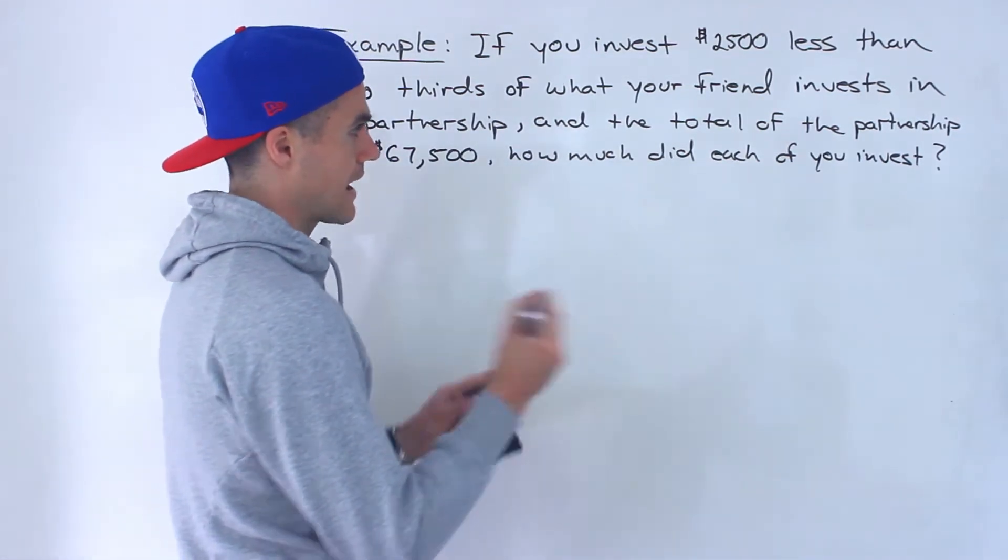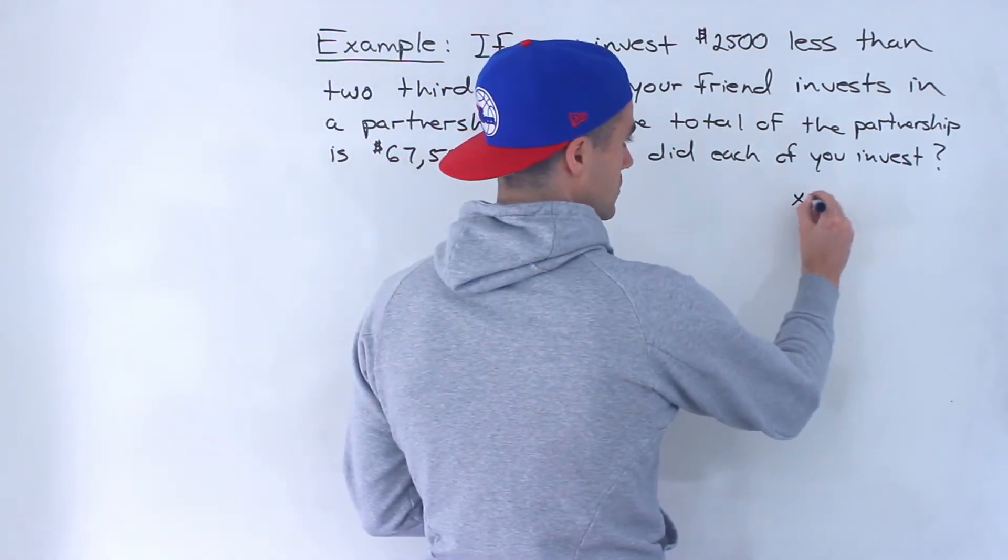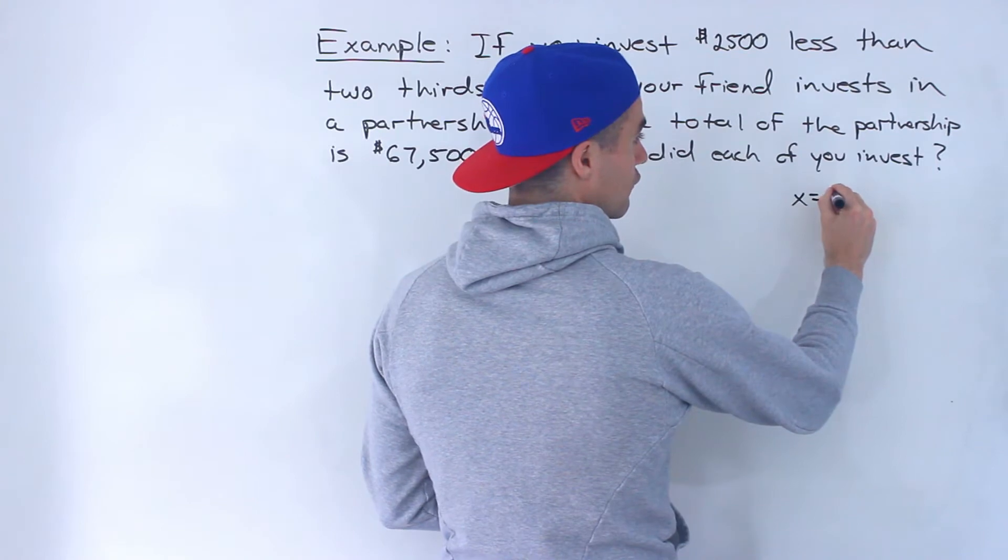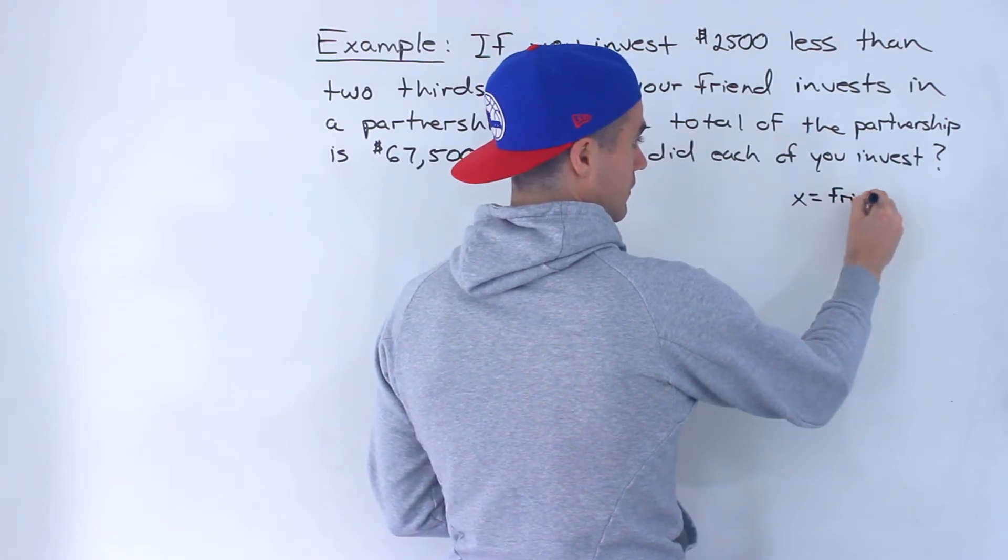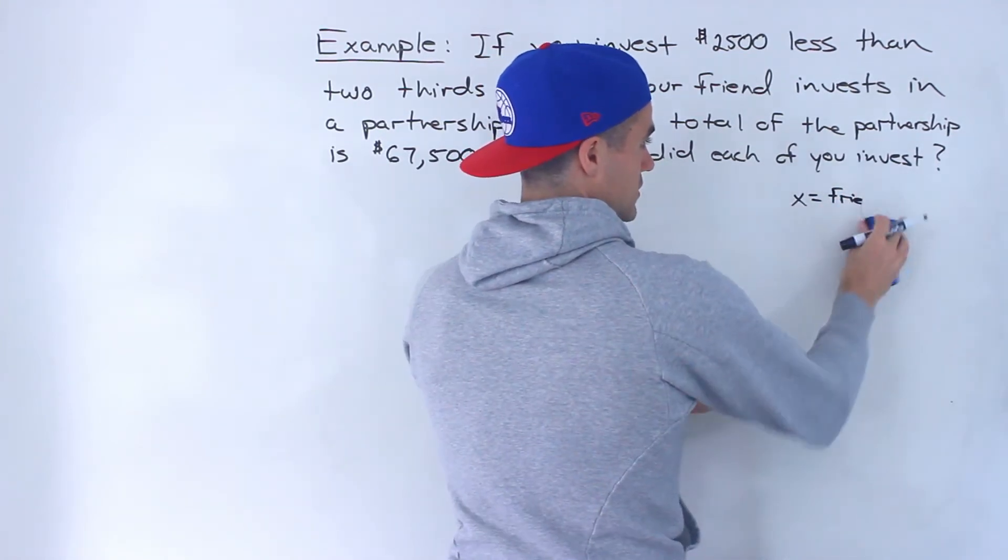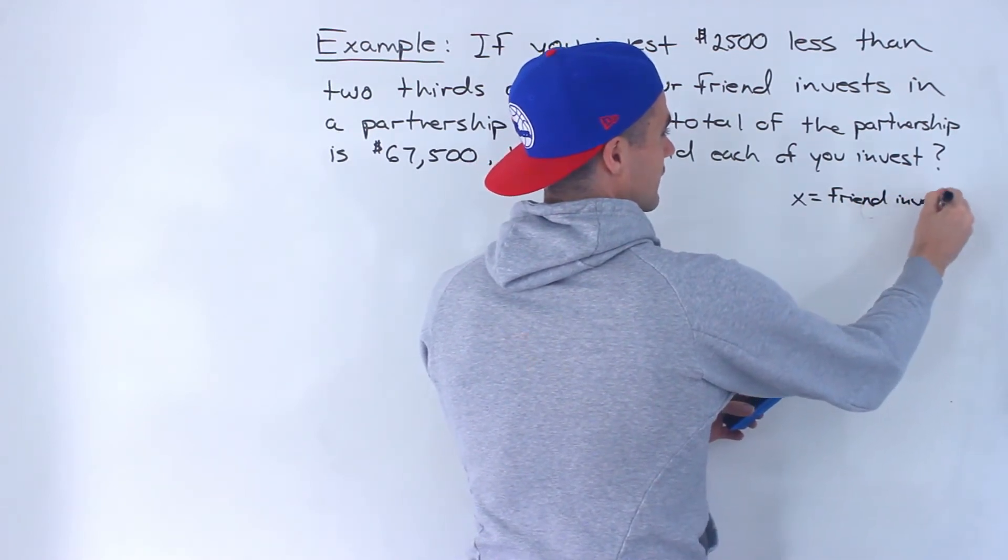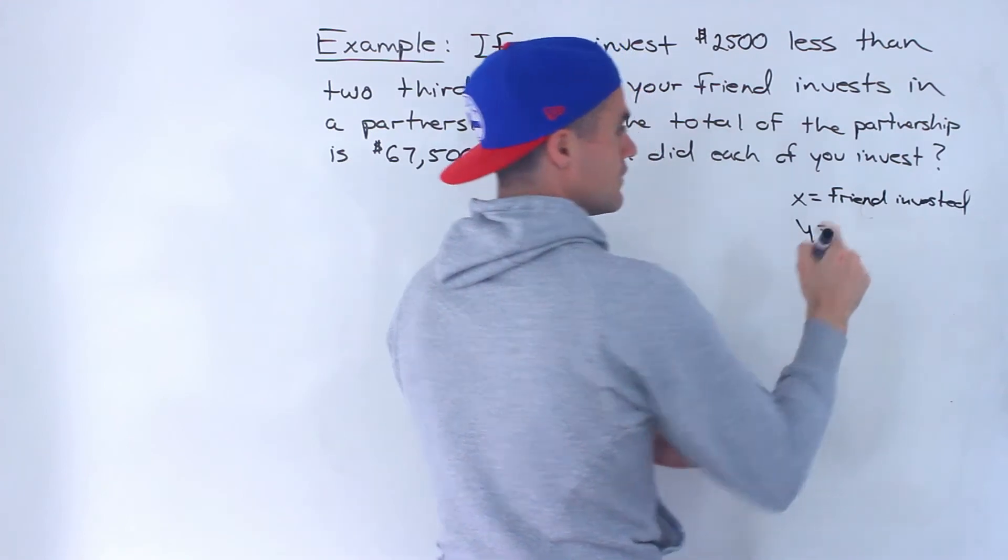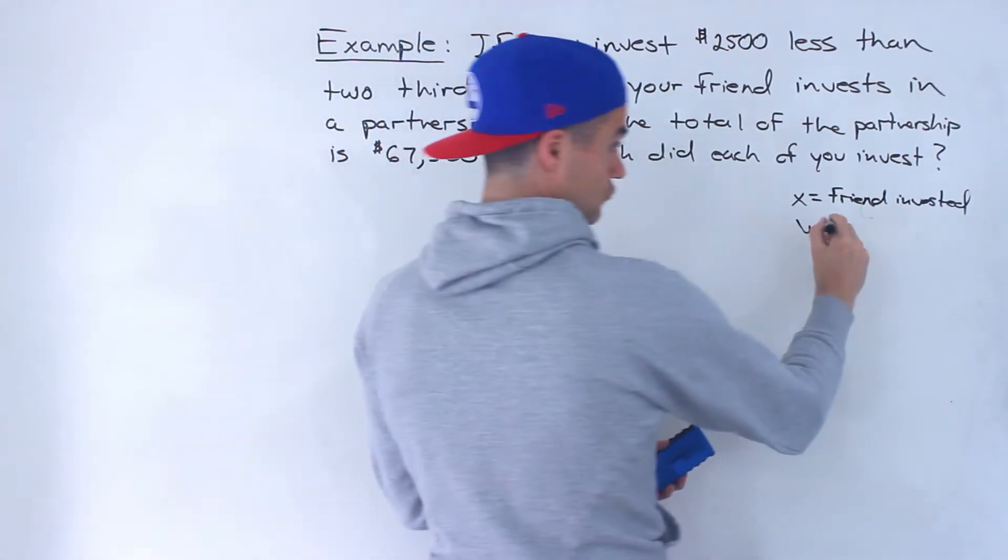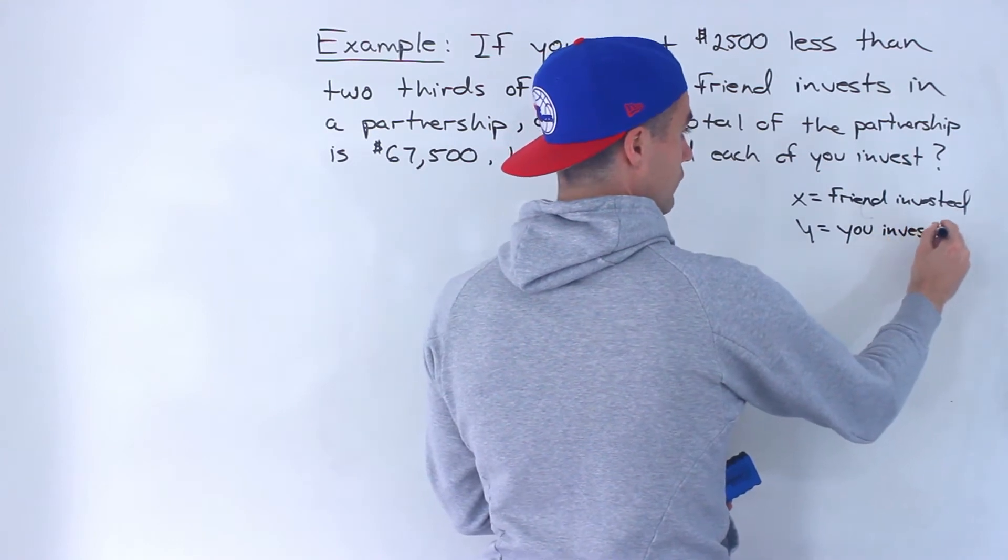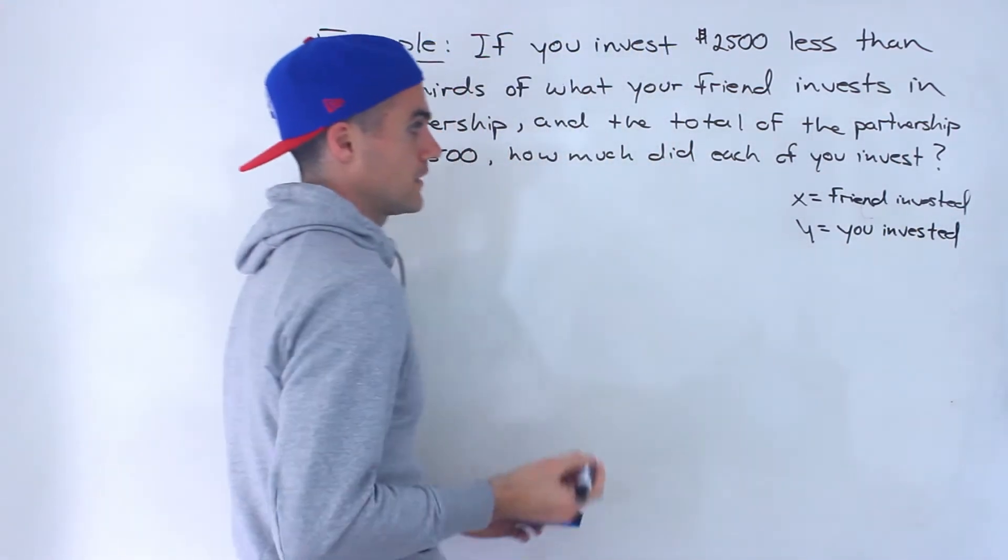So what I'm going to do is actually introduce two variables. I'm going to let x equal the amount that your friend—sorry I just wrote fried here—friend invested. And then I'm going to let y equal the amount that you invested. That's what we are solving for, the amount that each of you invested.